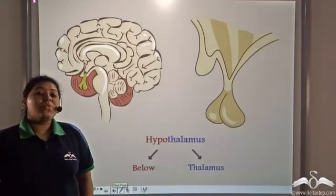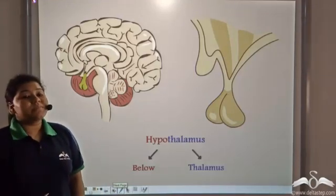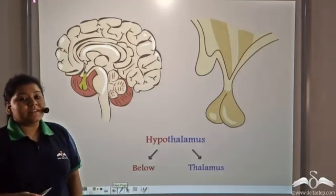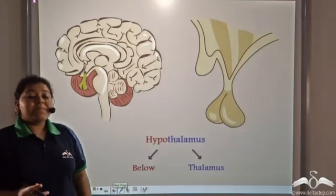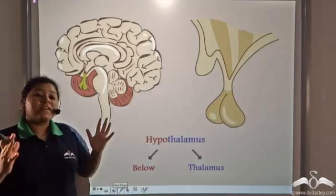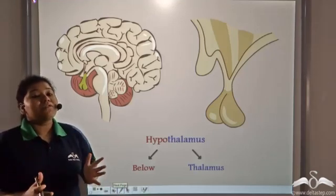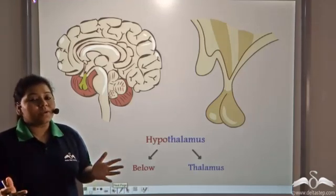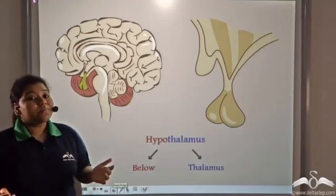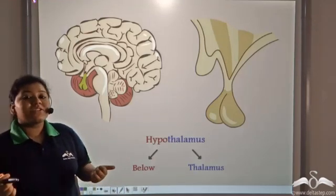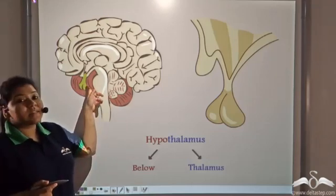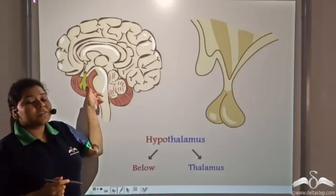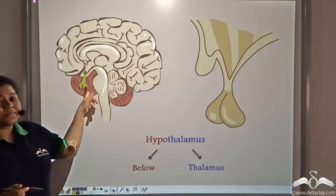So who controls the pituitary gland? We know that the brain is the controller of the entire body, so the brain must be controlling the pituitary gland as well. Now which part of the brain?